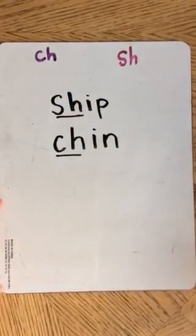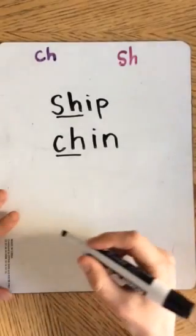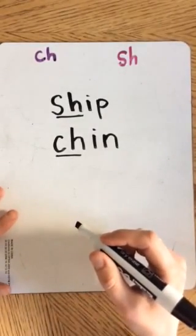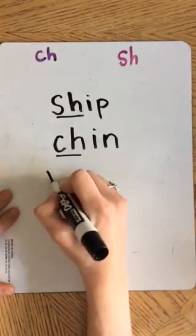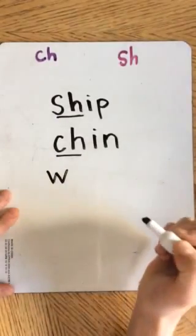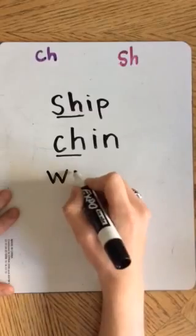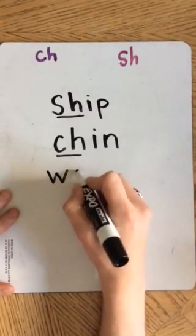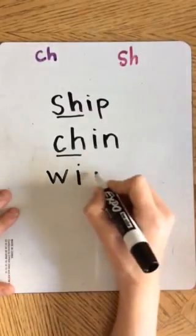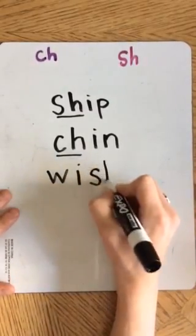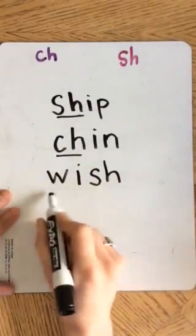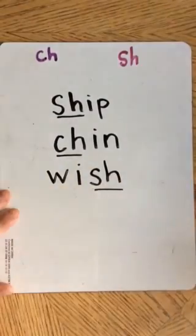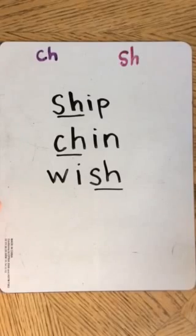Next word: WISH. Would you like to make a wish? Wuh-ish. I know W makes the wuh, I makes that short I — what makes the SH? Wish. Excellent.